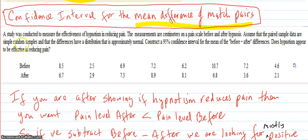A study was conducted to measure the effectiveness of hypnotism in reducing pain. The measurements are centimeters on a pain scale before and after hypnosis. Assuming that the paired data is a simple random sample and the differences have a distribution that is approximately normal, that's the normal requirement for using this method. Construct a 95% confidence interval for the mean of the before minus after differences. Does hypnotism appear to be effective in reducing pain?